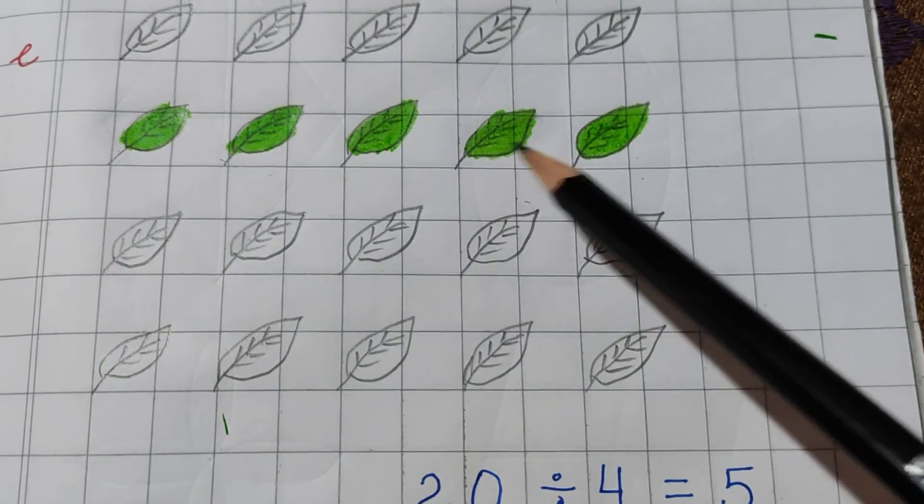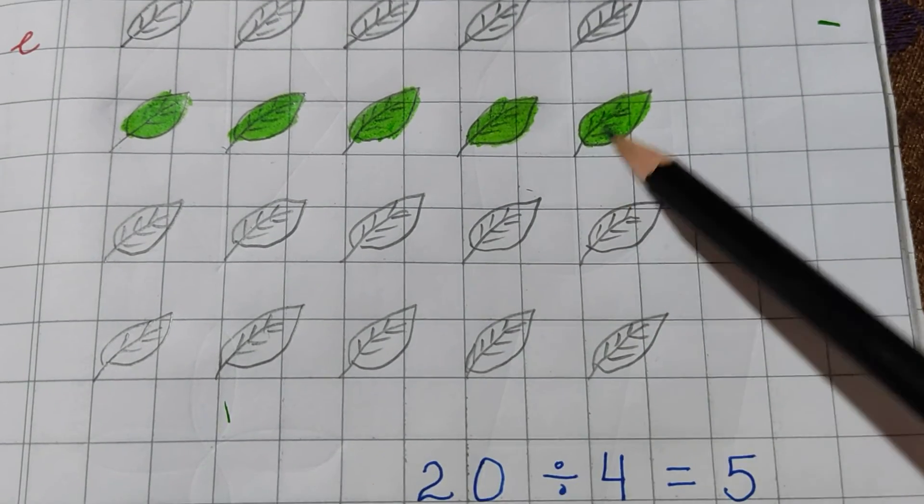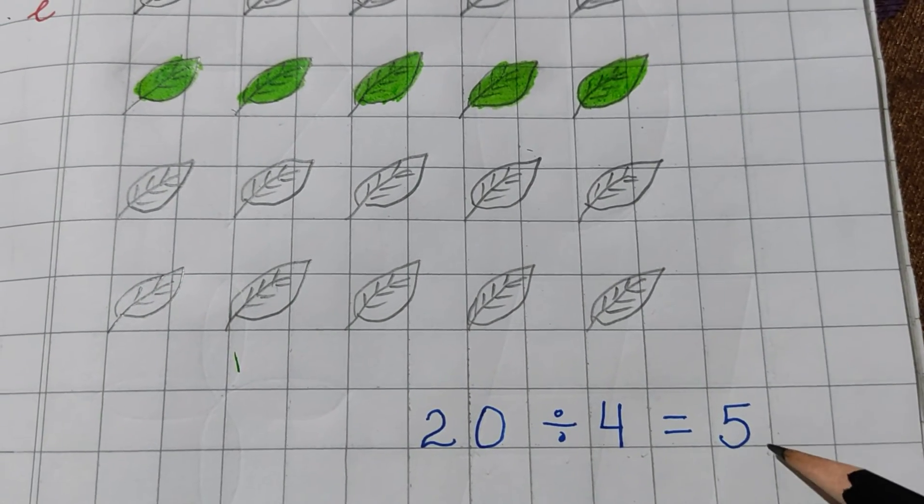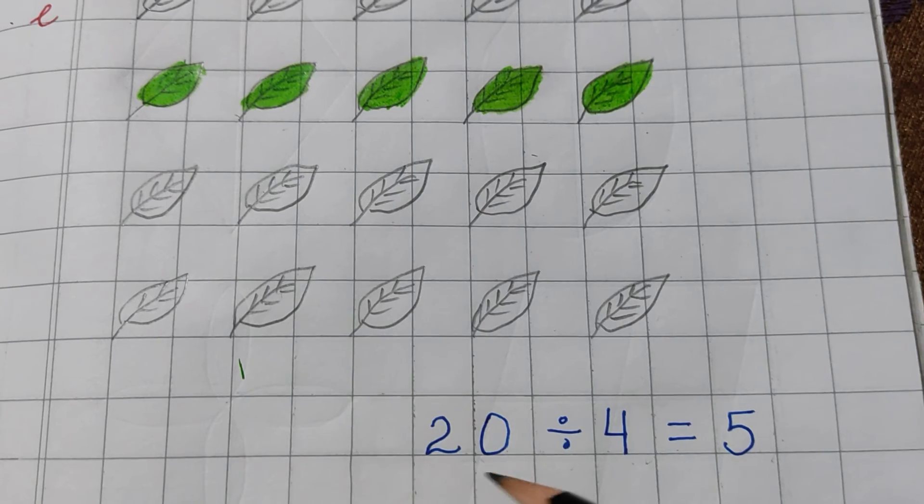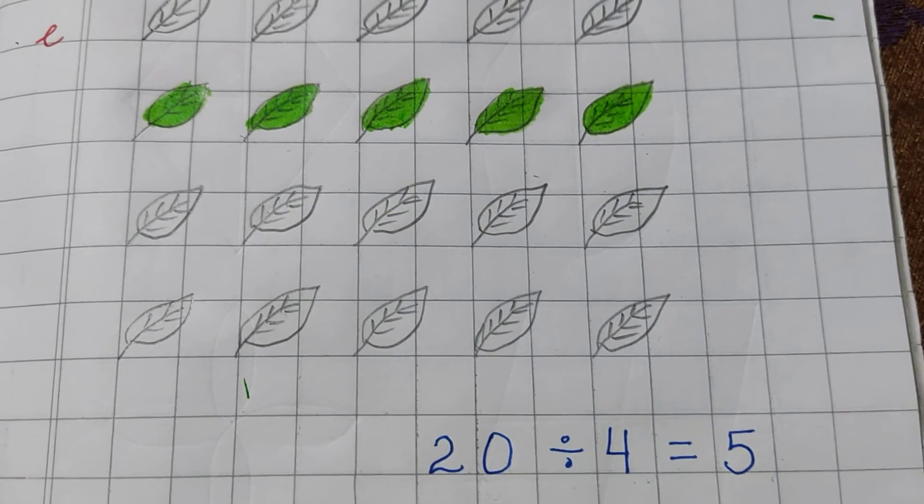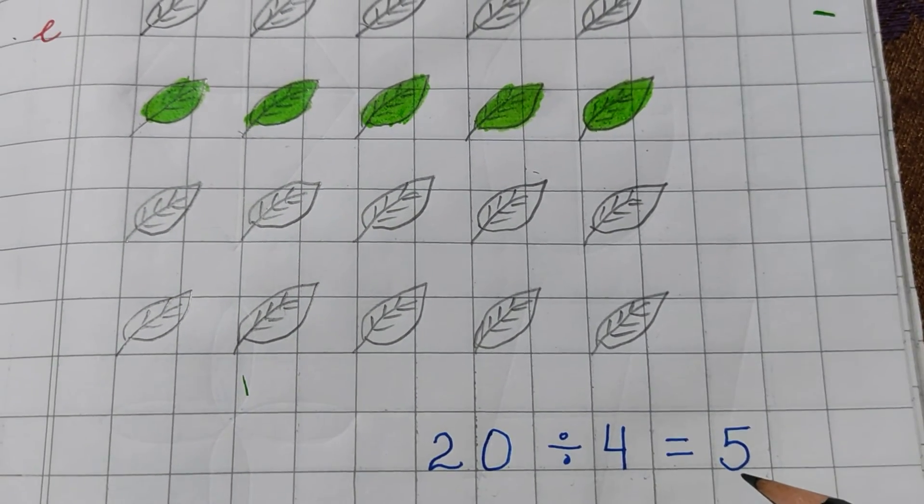That is why I have to color 5 leaves here. So, you can see 1, 2, 3, 4, 5. I have colored 5 leaves. That means 5 is the one-fourth part of 20. Agar 20 ka chotha bhaag, fourth part kya hoga? 5 hoga.